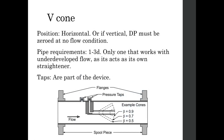For V-cone installation: position horizontal, or if vertical the differential pressure must be zeroed on a no-flow condition — though that's standard for all these elements. Piping requirements are only 1 to 3 diameters upstream, and it is the only element that works with underdeveloped flow. It essentially acts as its own straightener because the cone inside the piping pushes the flow where it needs to go. The taps are part of the spool itself: the low pressure side is attached to the end of the cone, and the high pressure side is on the upstream side.